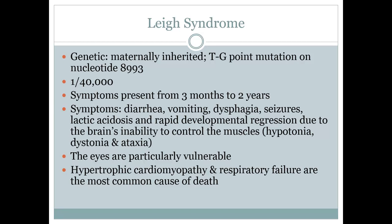The disorder will eventually start affecting the muscle systems, resulting in low muscle tone, involuntary muscle contraction, and lack of coordination. The muscles of the eyes are especially vulnerable, and there are often vision disorders associated with Leigh's syndrome. The most common sources of death are from thickening of the heart muscle — hypertrophic cardiomyopathy — and respiratory failure.